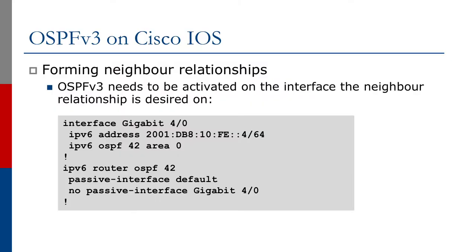On much older versions of IOS, Cisco used to configure OSPF by running it on the subnet — we don't do that anymore; we run OSPF on the actual physical interface. For OSPFv3, the CLI is exactly the same as shown. This time we use 'ipv6 router ospf', and to activate on the interface we use 'ipv6 ospf <process-id>' specifying which area the interface should sit in.